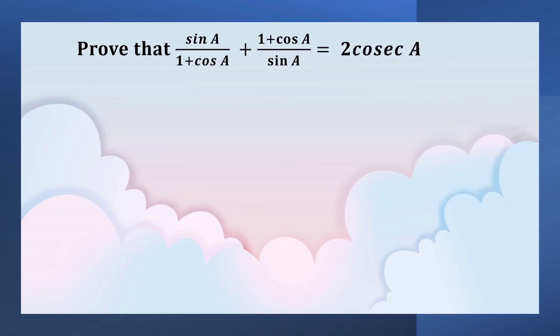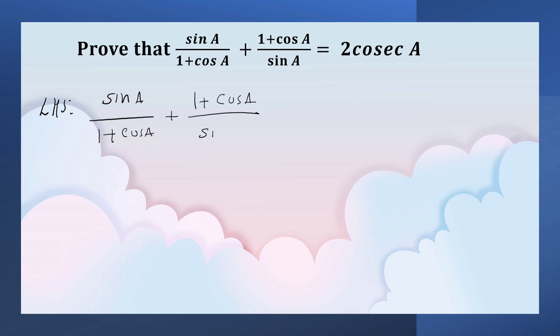We need to prove that sin A upon 1 plus cos A, plus 1 plus cos A upon sin A, is equal to 2 cosecant A. Here, LHS is sin A upon 1 plus cos A plus 1 plus cos A upon sin A.